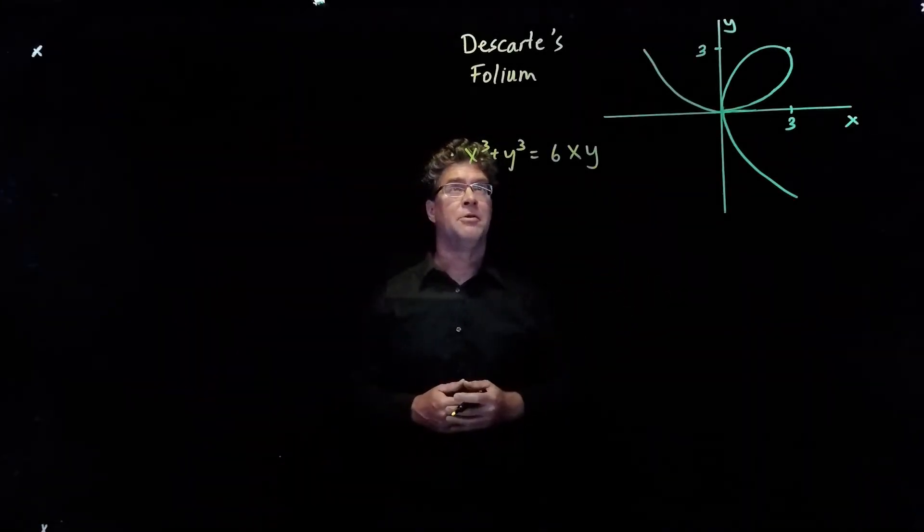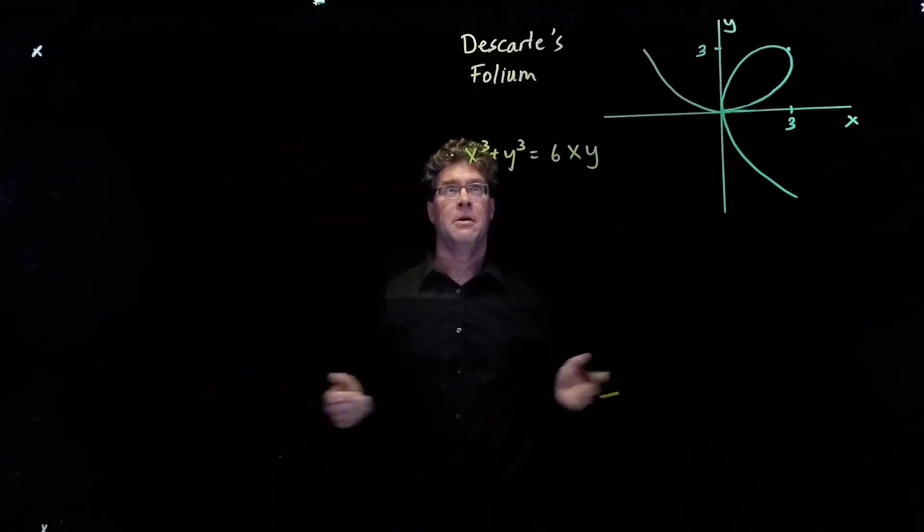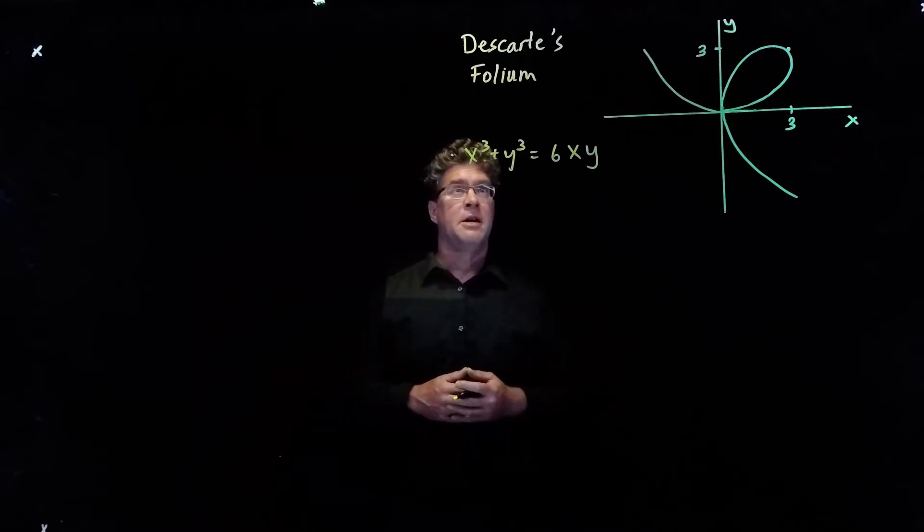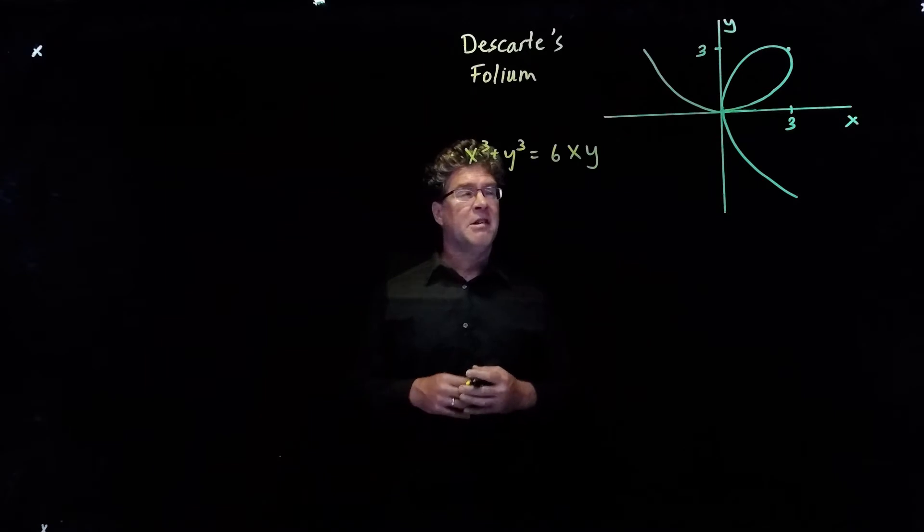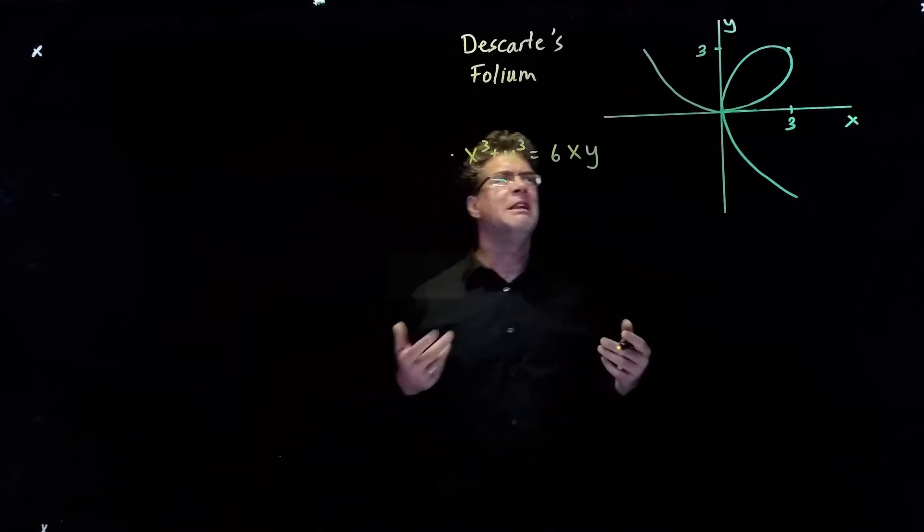This super cool curve is called the folium of Descartes. Descartes was a French mathematician in the 1600s. This looks a little bit like a leaf, and the word folium means leaf.